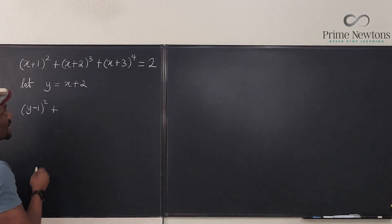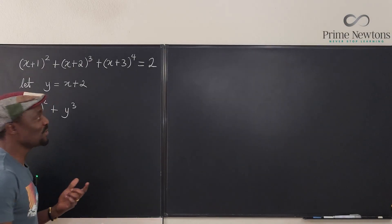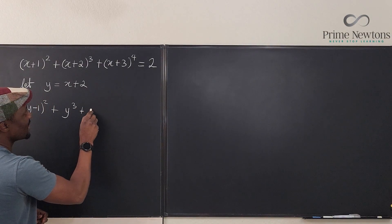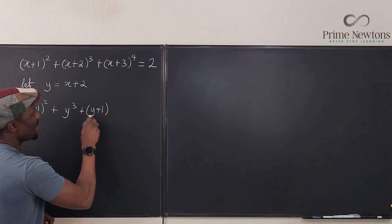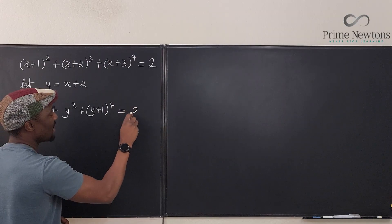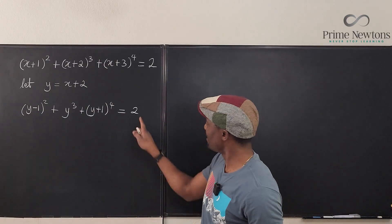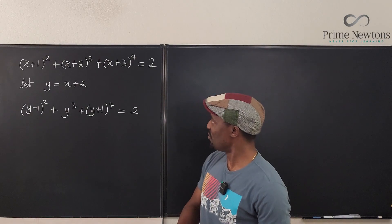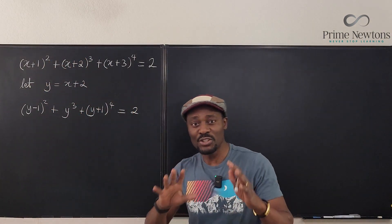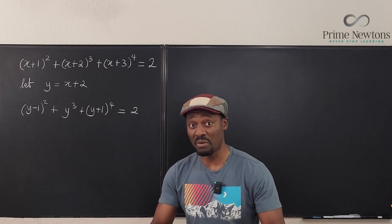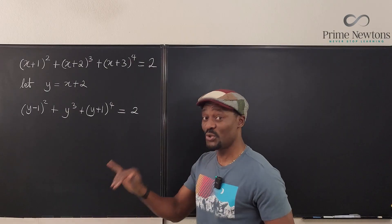The middle term is just Y cubed. And the last term is one more than x plus 2, so it's going to be (Y plus 1) to the fourth power. We still have the 2 on the right side. There's a reason why there's a 2 there, and there's a reason why these numbers are 1, 2, and 3 and these powers are 2, 3, and 4 — whoever made up the problem has put things there to make it easy for you to solve if you just do what you're supposed to do.